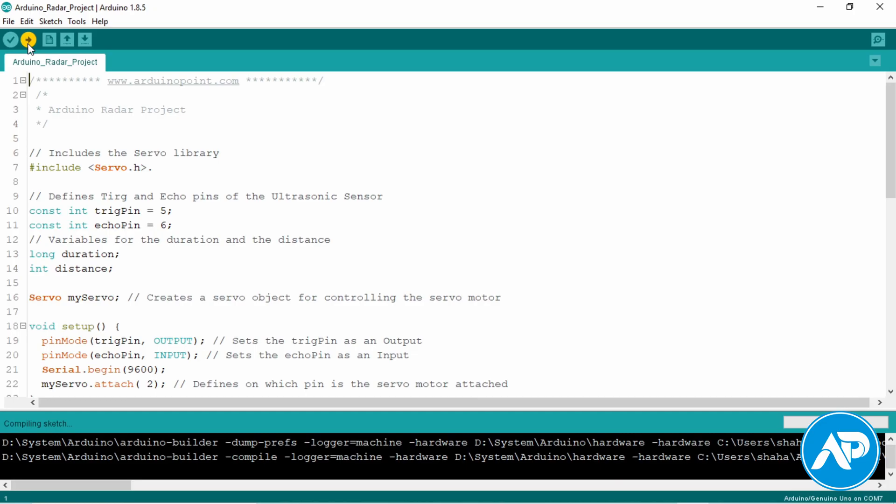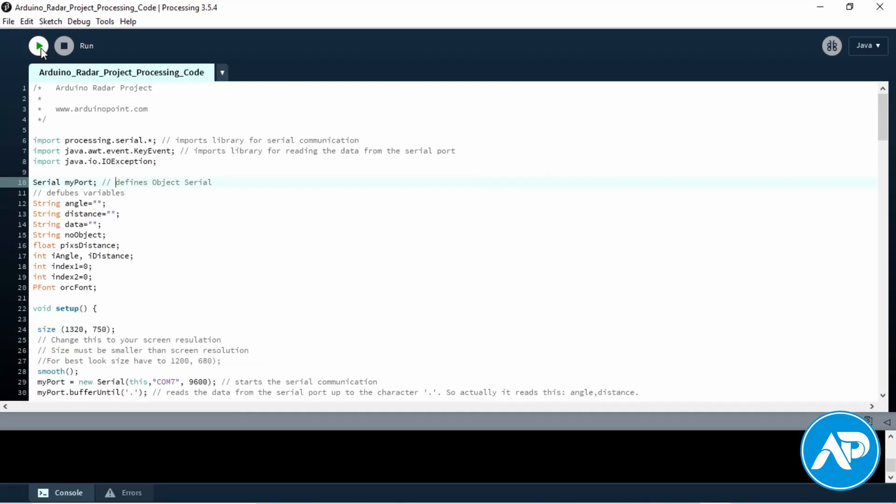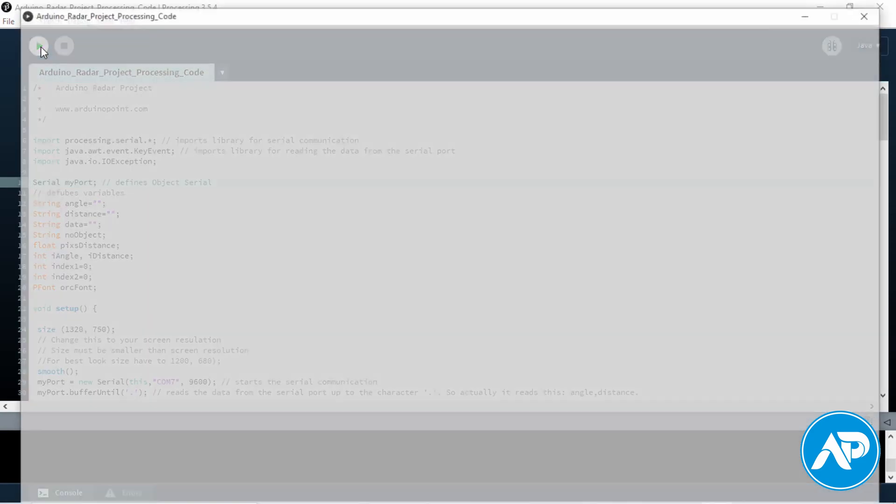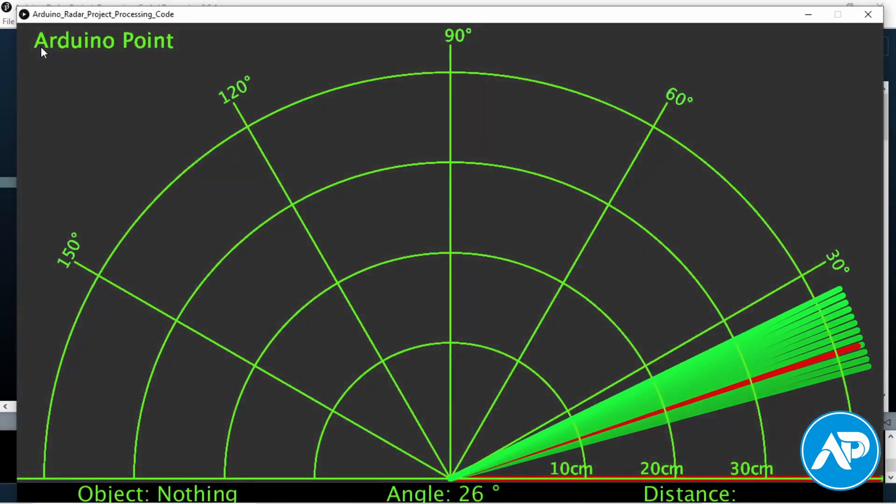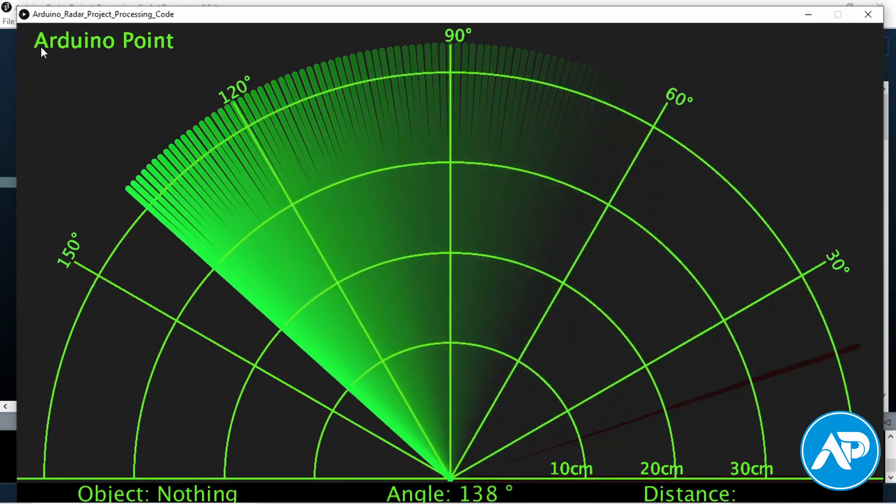Finally hit the upload button. After the code is successfully uploaded, open the Processing software. Set your exact port name in the Processing code, then hit the run button. After the code runs successfully, we get a new window. This is the output of the Processing code.